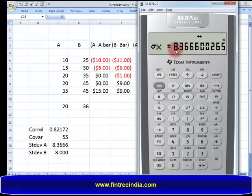Sigma X, the population standard deviation is 8.36, which we have here. Downward arrow again, Y bar is 36. SY, sample standard deviation of Y values. Sigma Y is 8, the standard deviation.